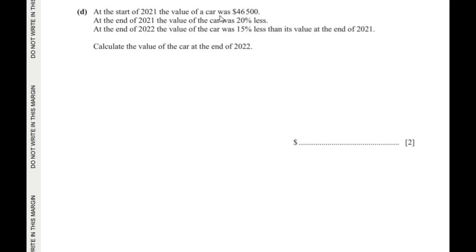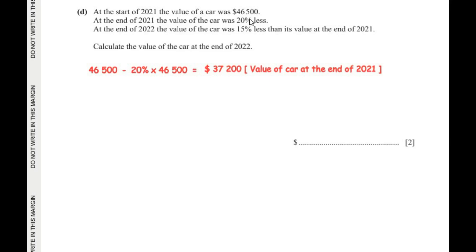Moving on to the last sub-question. At the start of 2021, the value of the car was $46,500. At the end of 2021, the value was 20% less. So: $46,500 − 20% of $46,500, which gives us a value of $37,200 at the end of 2021.